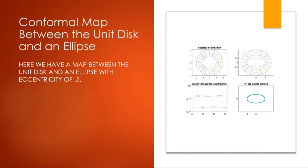Here's an example of a conformal map between an ellipse and a unit disk. As you can see, it works rather well. This is an eccentricity of 0.5, so it's not really flat.